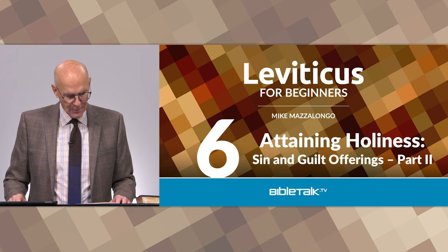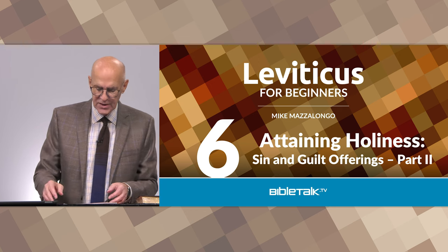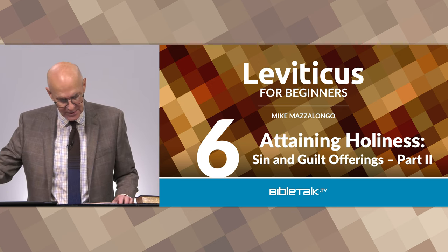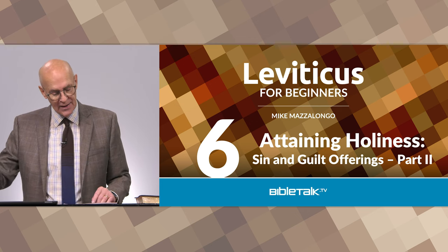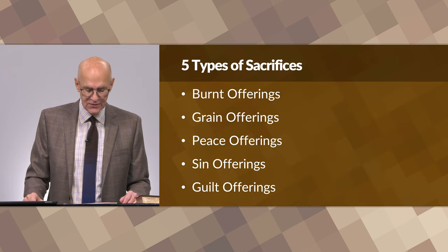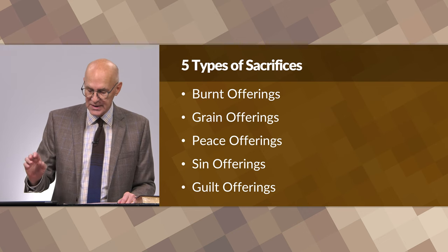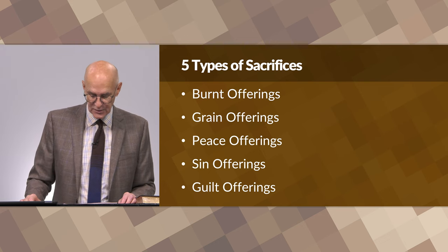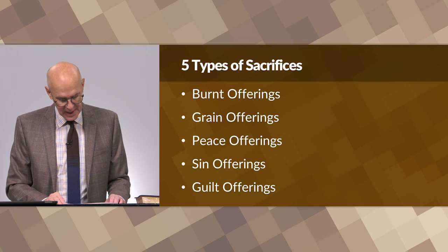We're looking at the various types of sacrifices made by the priests — first at the tabernacle, and later on when settled in the promised land, the same sacrifices and offerings were made at the temple. Just for review, the five types of sacrifices: the burnt offerings, the grain offerings, the peace offerings, the sin offerings, and the guilt offerings, which we'll look at in today's lesson.